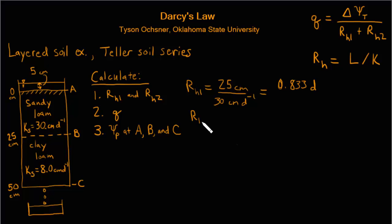For the second layer we can calculate the hydraulic resistance the same way. Again the thickness is 25 centimeters and the conductivity in this case is only 8 centimeters per day. So when we compute that ratio we find that the hydraulic resistance of the second layer is 3.13 days.